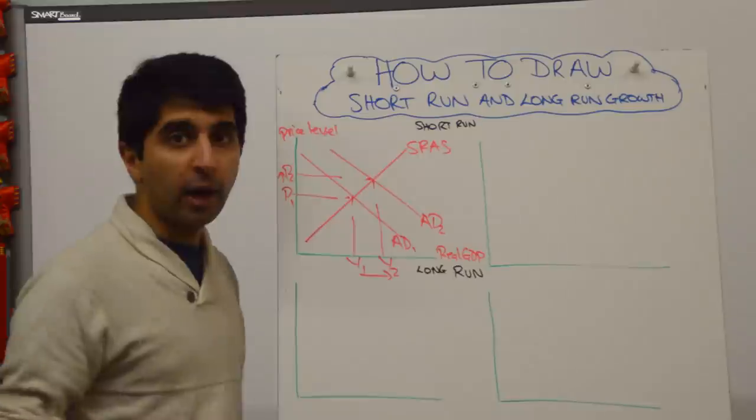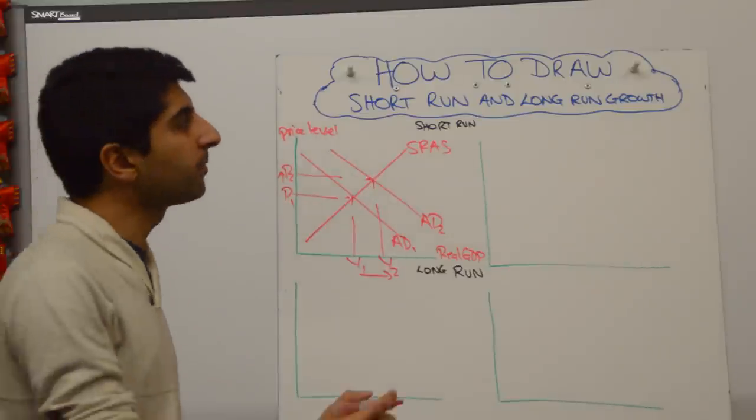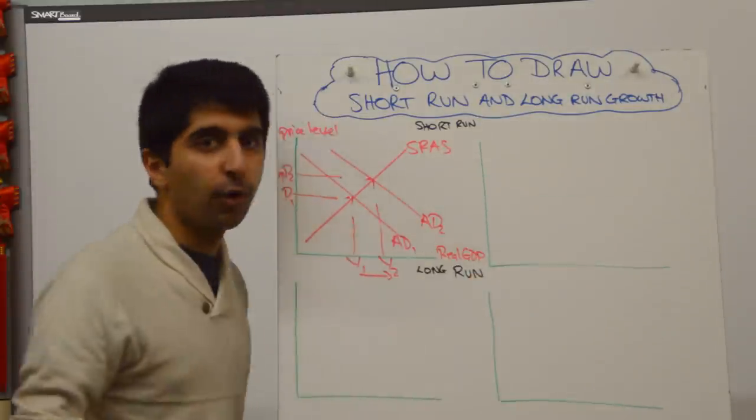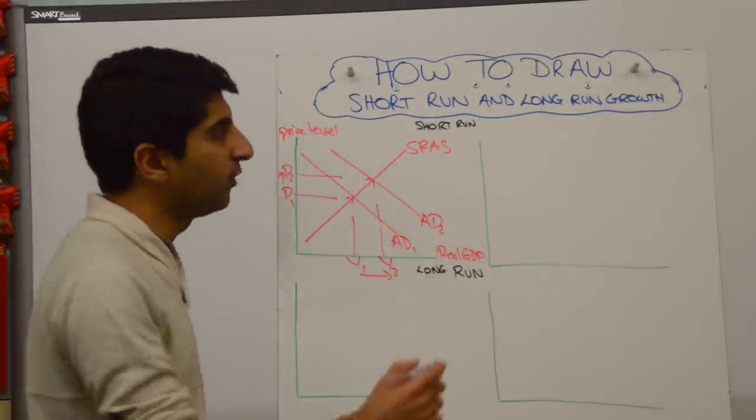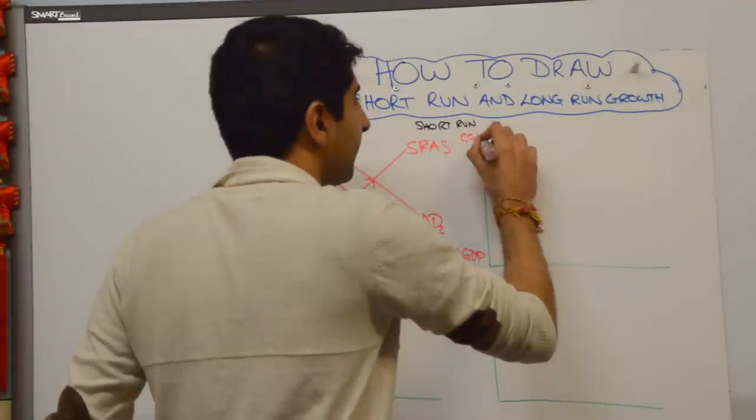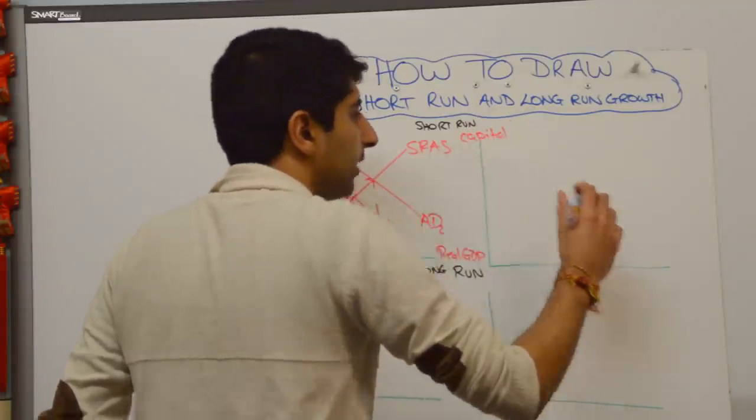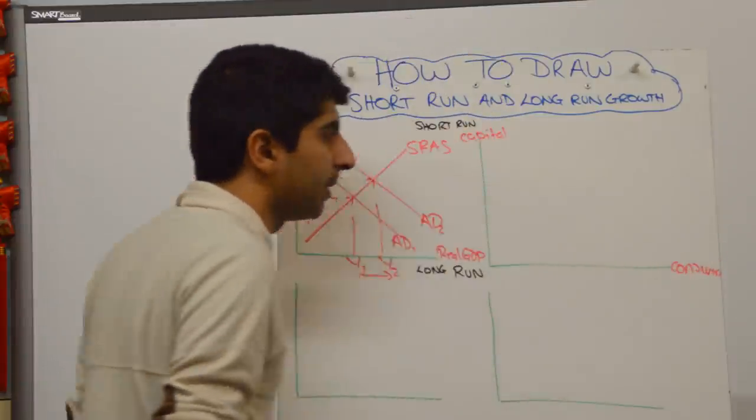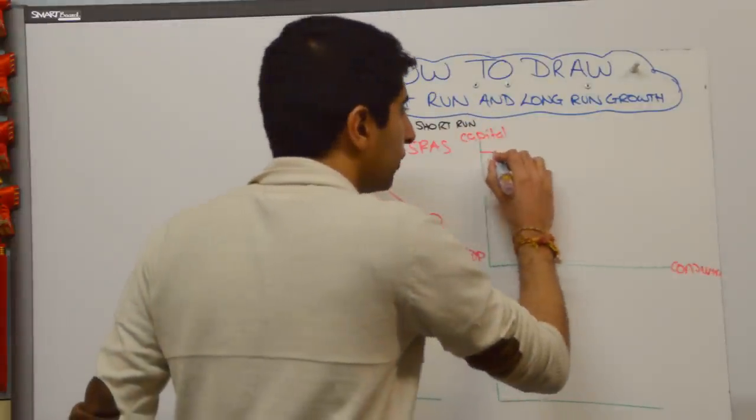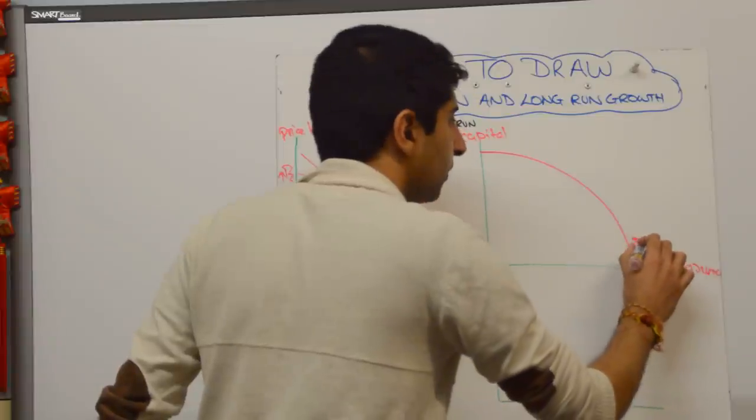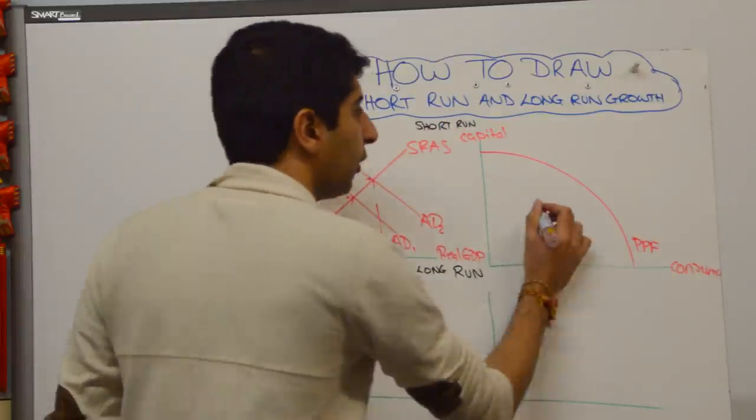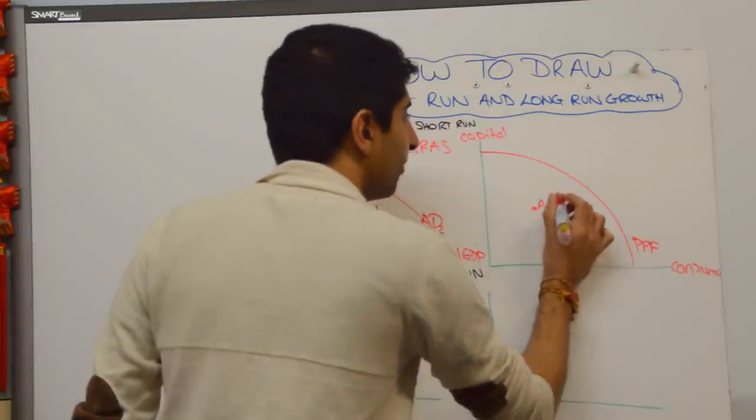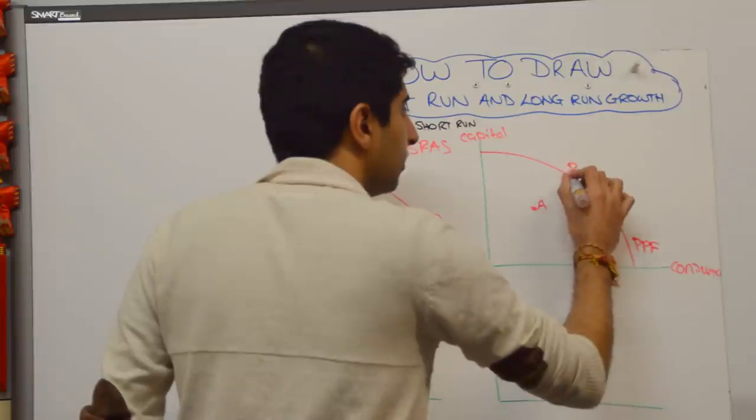We could also show that on a PPF, which you might need to do. So we need to draw a macro PPF here. A simple way of doing it is by labeling the axes capital and consumer—capital goods and consumer goods. That will be absolutely fine. Draw your concave PPF like you used to and all you need to show is a movement of an economy from point A to point B.